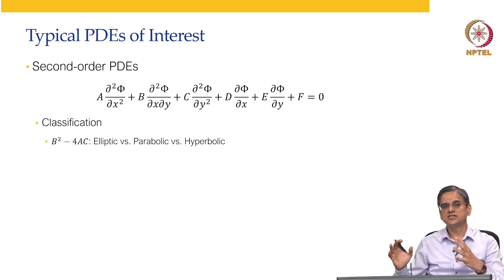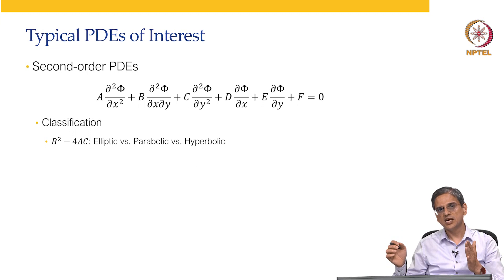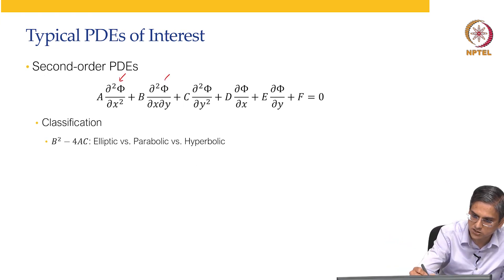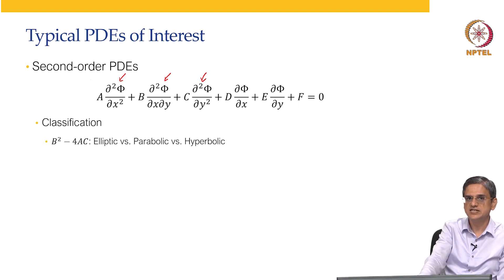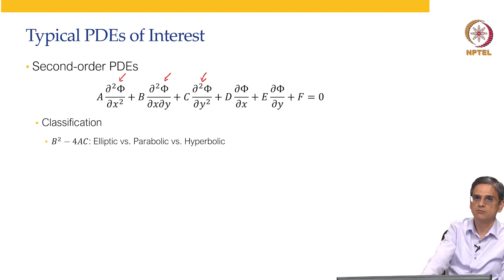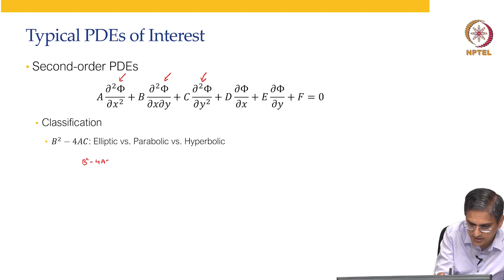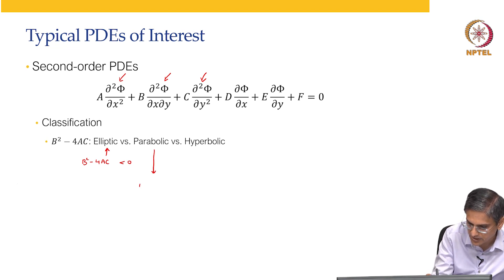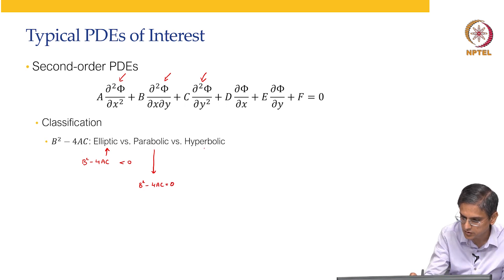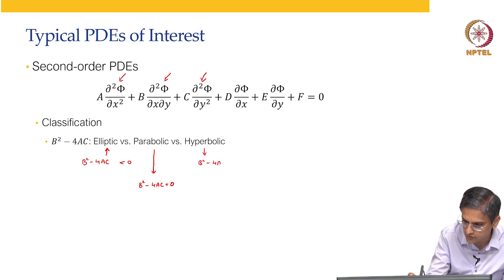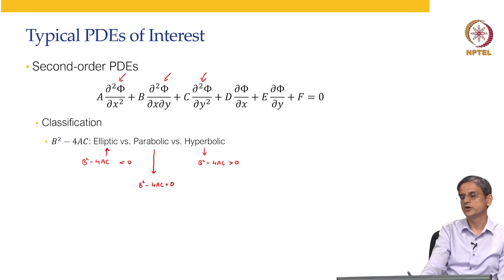As scientists and engineers, there are a certain set of PDEs that we encounter most often. Second-order PDEs and first-order PDEs are most common. Second order means the largest derivative term is d²/dx² or d²/dx dy. These second-order PDEs are further classified as elliptic, parabolic, or hyperbolic. If b² minus 4ac is less than 0, it is called elliptic. If b² minus 4ac equals 0, it is parabolic. And if b² minus 4ac is greater than 0, it is hyperbolic.